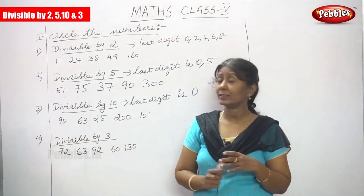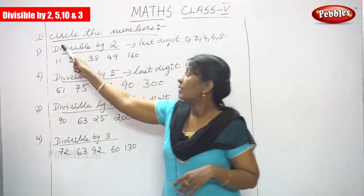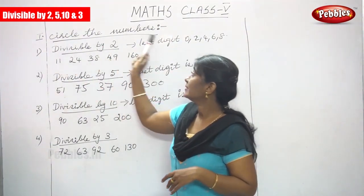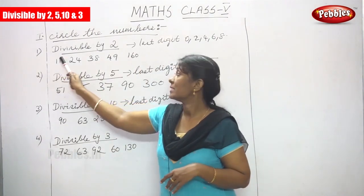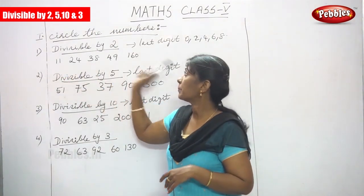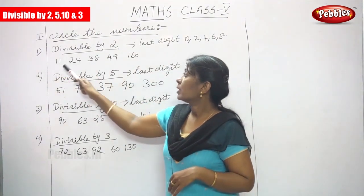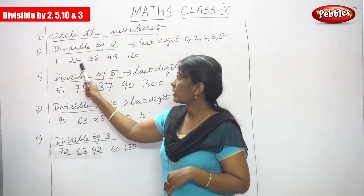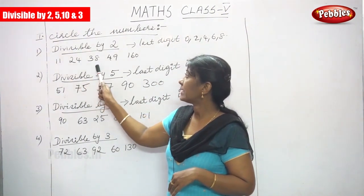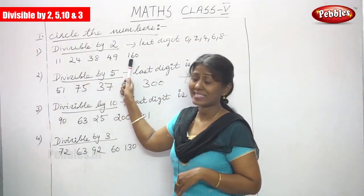Now we are doing the exercise. Circle the numbers. First question: divisible by 2. The numbers are 11, 24, 38, 49, 160.